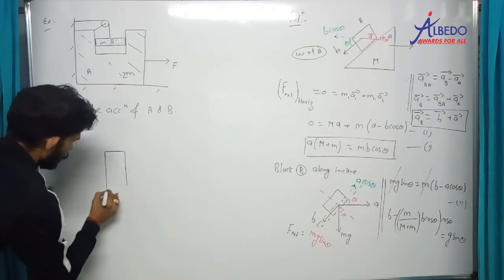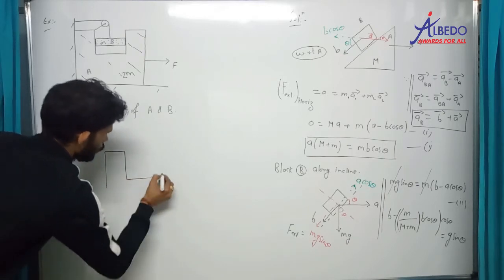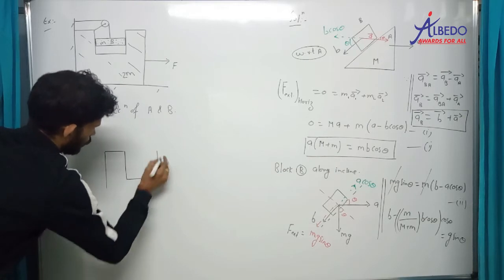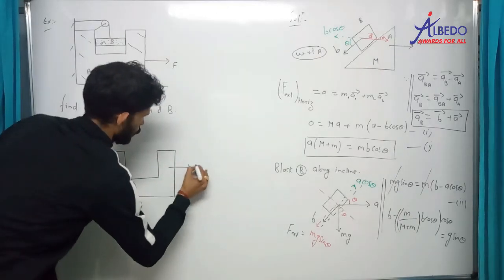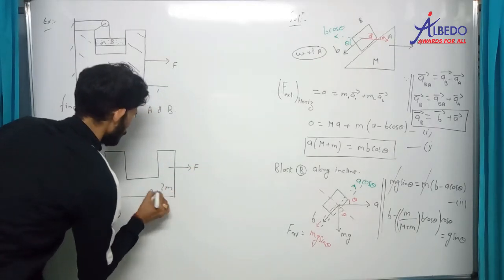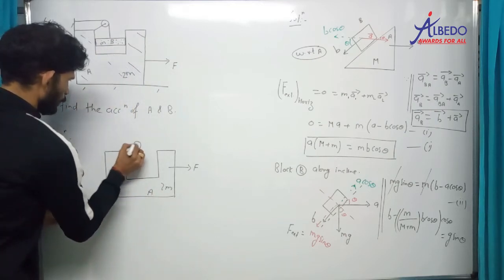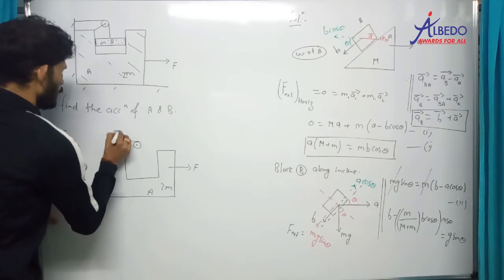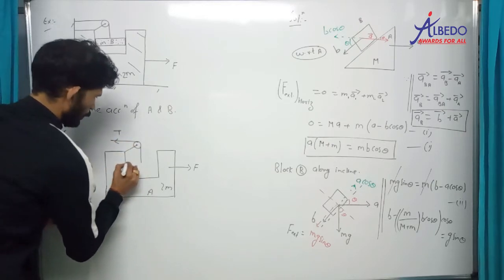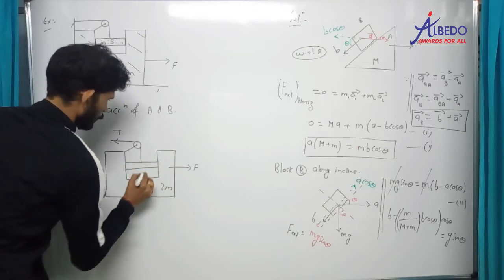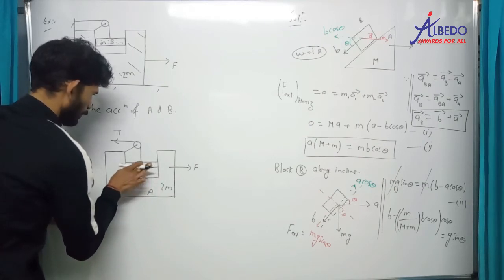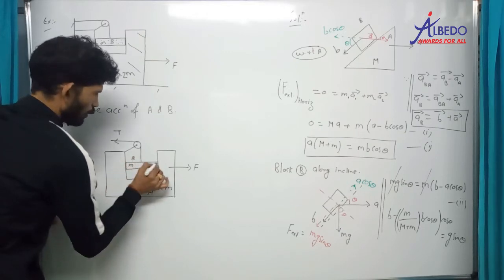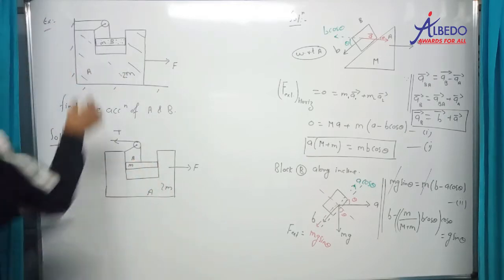हम लोग FBD draw करते हैं. Block 2M, A. Tension T. A हो गया, और यह रहा आपका B. B बिल्कुल — इसमें ही फँसा हुआ है. मैंने इस system को cut करा.